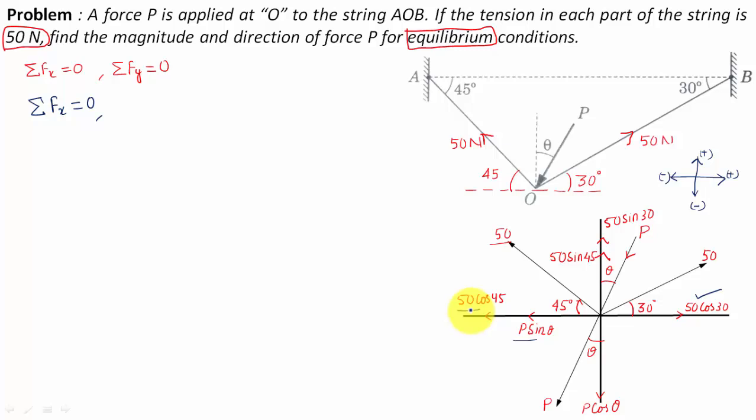This force 50 cos 30 shall be taken as positive, whereas P sine theta and 50 cos 45 shall be taken as negative. So 50 cos 30 minus 50 cos 45 minus P sine theta equals zero. P sine theta shall work out as 50 cos 30 minus 50 cos 45, which eventually works out as 7.945 Newtons. So P sine theta equals 7.945 Newtons - this is equation number one.